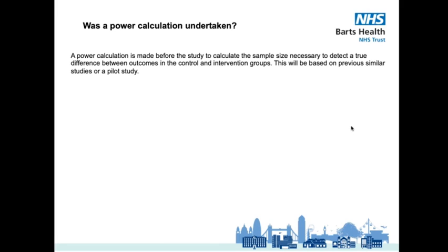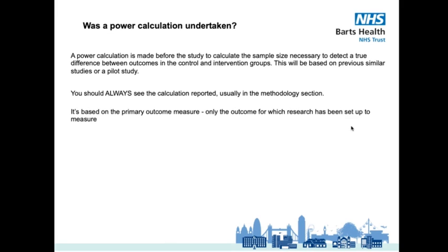If previous research or a pilot study identified that the intervention has a pronounced effect, a power calculation based on that would result in a smaller sample size being required to detect that large effect. The bottom line is you should always see a power calculation reported, usually in the methodology section, and if not, that's a red flag. The power calculation is based on the primary outcome measure, the only outcome for which the research has been set up. Secondary outcomes are only there for guidance or useful for future research.